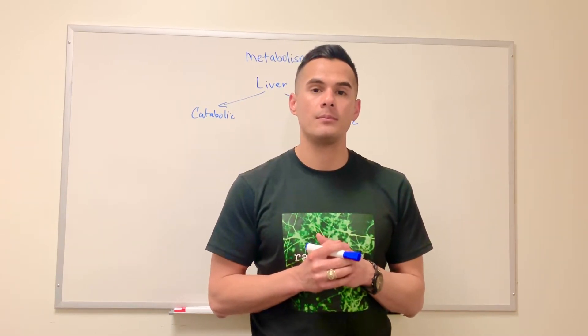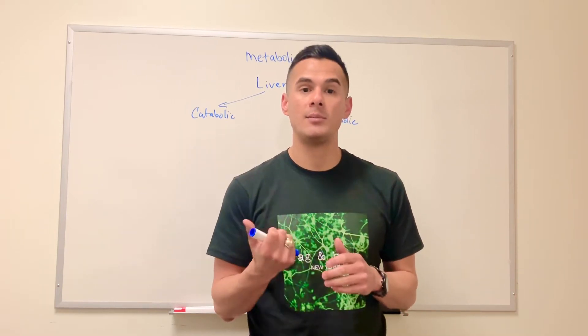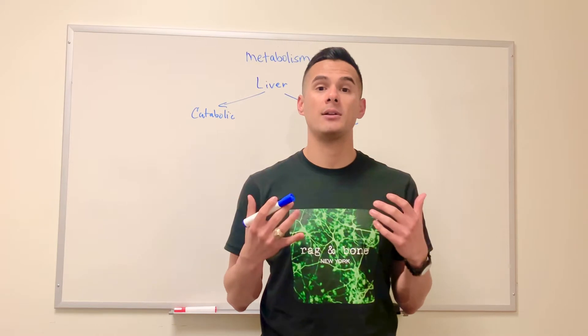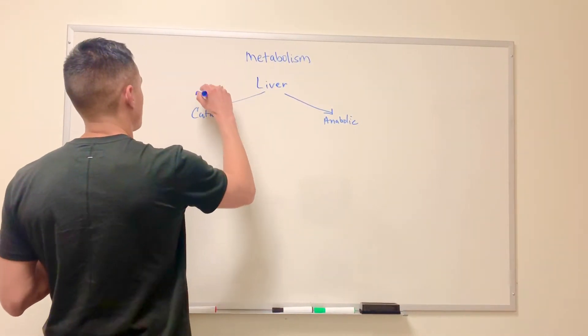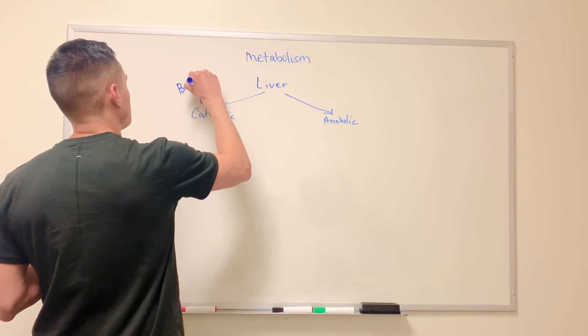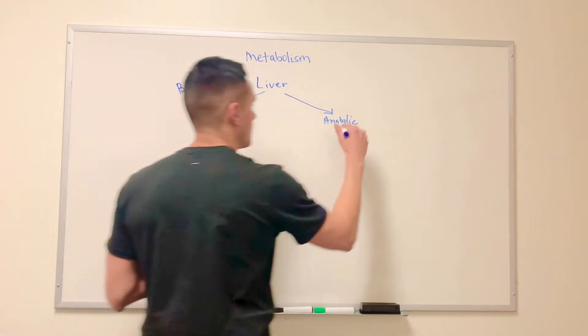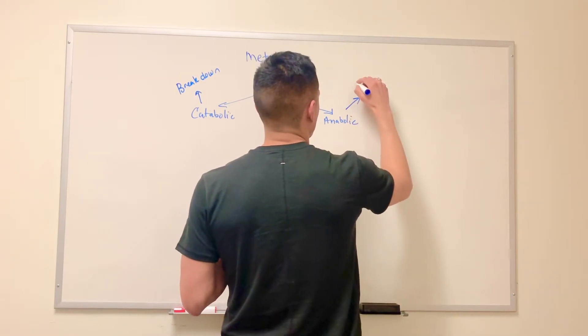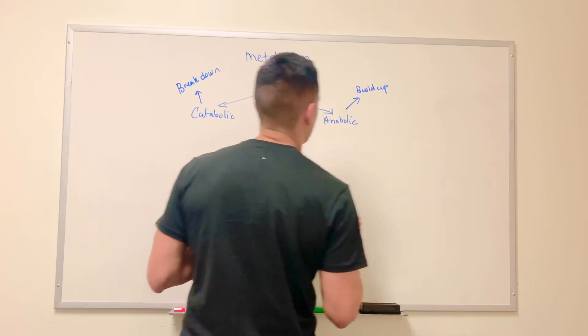And so the metabolic reactions are divided into two main types. So you have anabolic and catabolic. Catabolic means to break down, so we're breaking down these polymers. With anabolic we are building up.